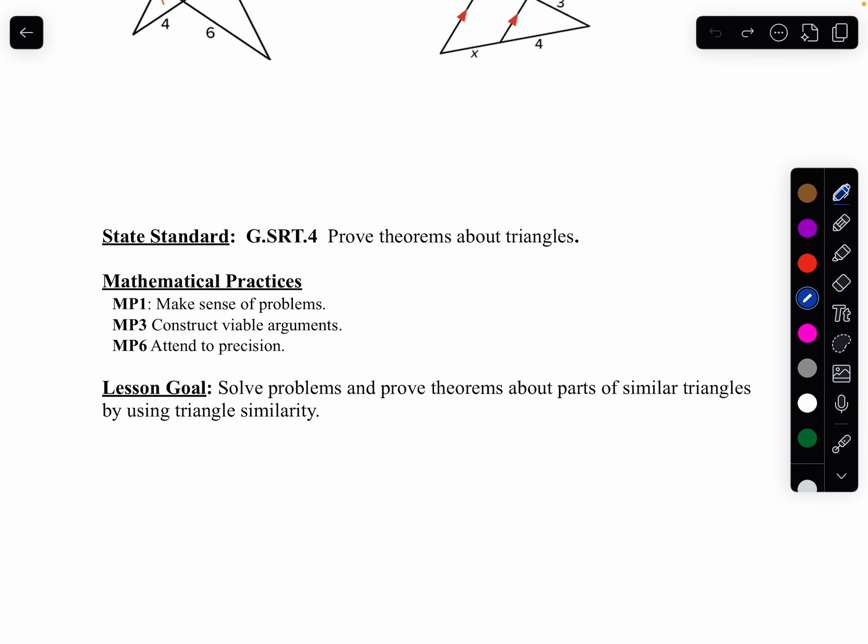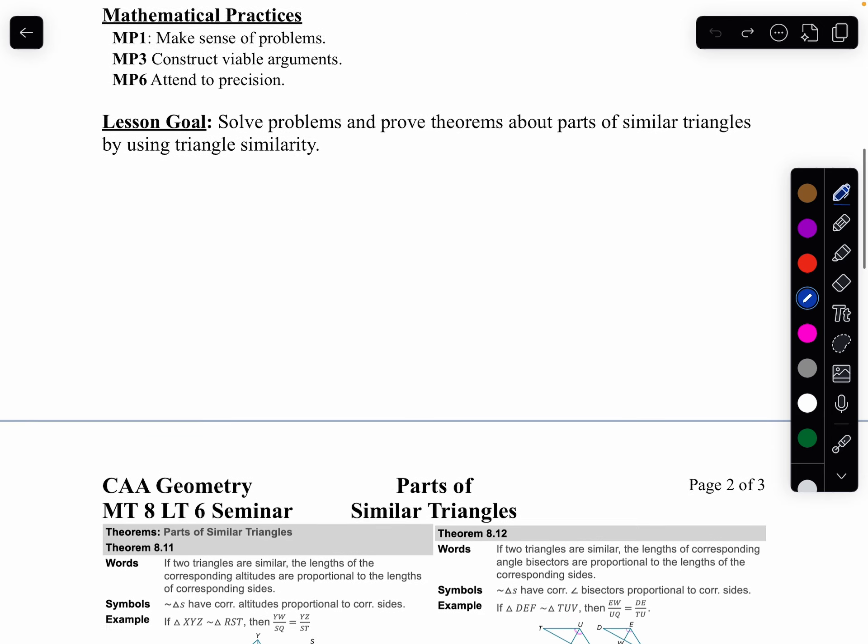What we're going to do today is we're going to finish up looking at similar shapes, and we're going to look at different parts. And if shapes are similar, we have a whole bunch of different parts that are also proportional besides just the sides. And we're going to look at one special theorem.